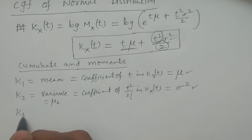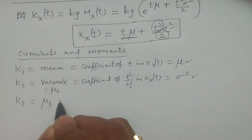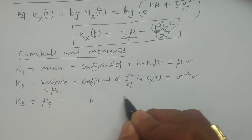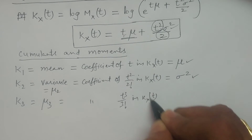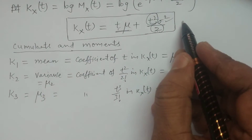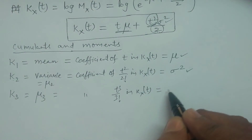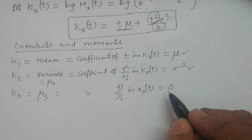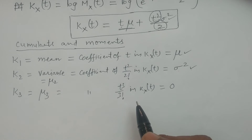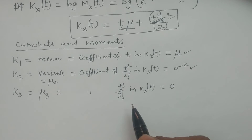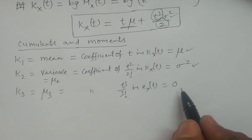The third cumulant k₃, which is μ₃, is equal to the coefficient of t³/3! in K(x,t). Do you see any t³ coefficient here in K(x,t)? No. So hence it is 0. We have already studied the property that odd-order moments about the mean of the normal distribution vanish to 0. Here we have proved again that μ₃ is 0.